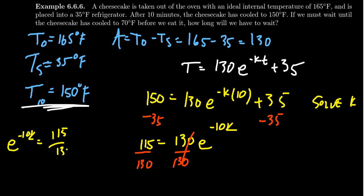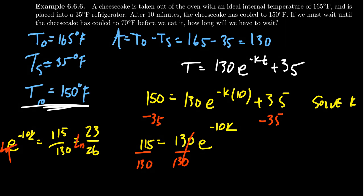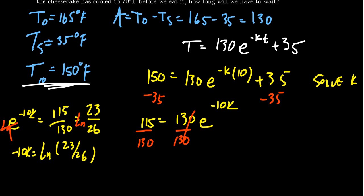That then gives us that E to negative 10K is equal to 115 over 130, which we can simplify the fraction. This becomes 23 over 26. I'm hesitating to use decimals because I don't want to get a rounding error, so I want to keep things fractions. You don't have to reduce the fraction if you don't want to. Now to get rid of the natural exponential on the left hand side, we need to take the natural log of both sides so that these cancel. That would then give us negative 10K is equal to the natural log of 23 over 26.